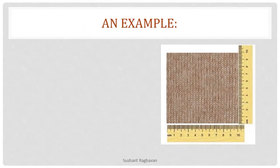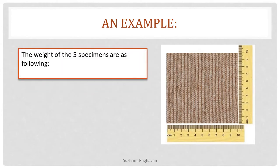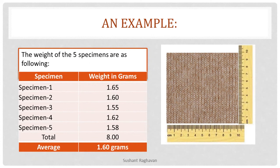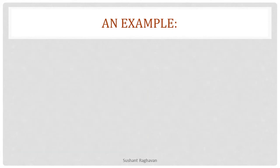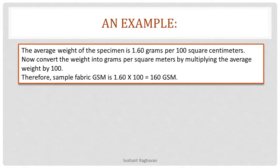Example: the weight of 5 specimens are as follows — Specimen 1: 1.65 g, Specimen 2: 1.60 g, Specimen 3: 1.55 g, Specimen 4: 1.62 g, Specimen 5: 1.58 g. Total: 8 grams, average: 1.6 grams. The average weight of the specimen is 1.60 gram per 100 square centimeters. Now convert the weight into grams per square meter by multiplying the average weight by 100. Therefore, sample fabric GSM = 1.60 × 100 = 160 GSM.